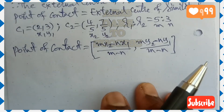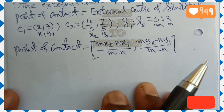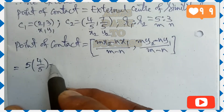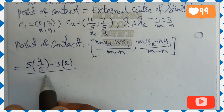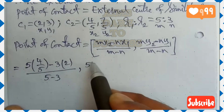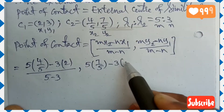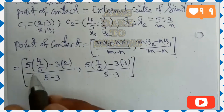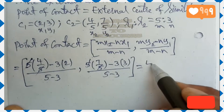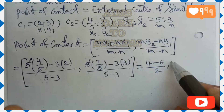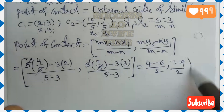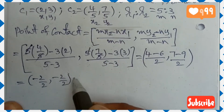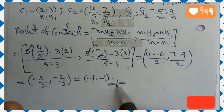Substituting: x-coordinate = (5 × 4/5 − 3 × 2) / (5 − 3) = (4 − 6) / 2 = −2/2 = −1. y-coordinate = (5 × 7/5 − 3 × 3) / (5 − 3) = (7 − 9) / 2 = −2/2 = −1. Therefore the point of contact is (−1, −1).